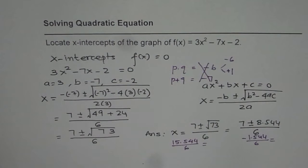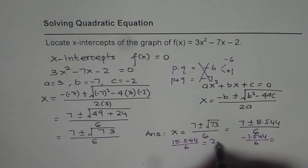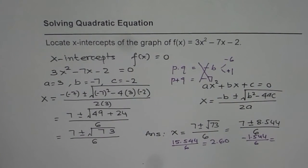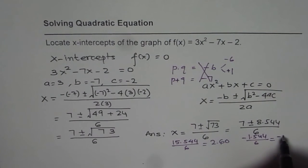15.544 divided by 6 equals 2.59, so I'll round it to 2.60 to two decimal places. And -1.544 divided by 6 we get -0.257, which I can round to -0.26.